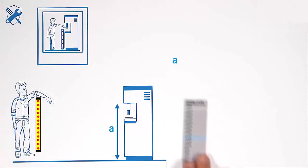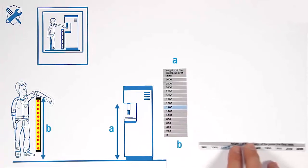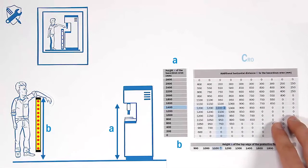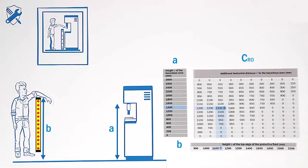To check a reaching over situation, the height A of the hazardous area and the height B of the upper edge of the detection zone are relevant. With the given values, the additional intrusion distance C reaching over can be identified on the table.